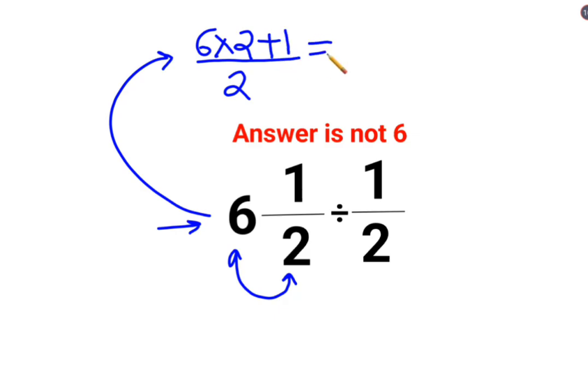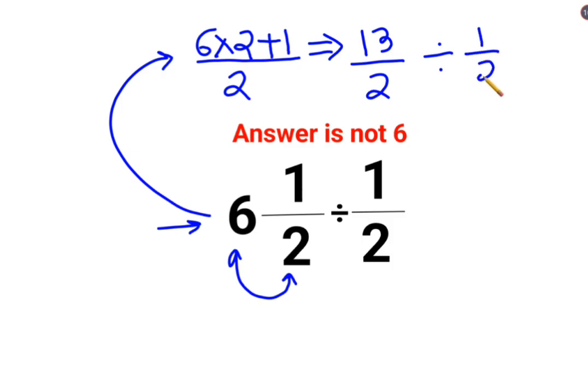So this then changes to 6 times 2 is 12, plus 1 is 13. So we have 13 divided by 2, divided by 1/2. Now at this point, you can do the division.